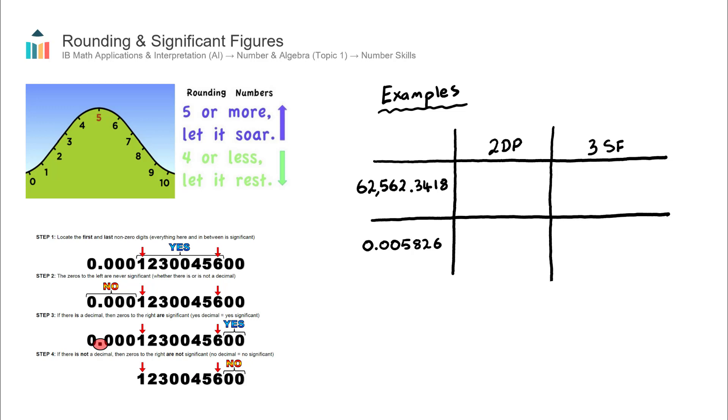I'm going to demonstrate with a couple of examples and talk about the theory listed on the left hand side as we go through it. Let's start with this first number: 62,562.3418. Let's round this to two decimal places and then three significant figures.